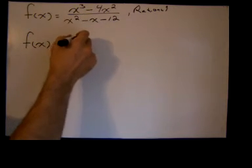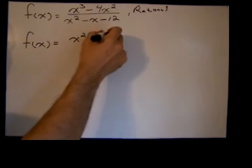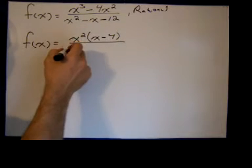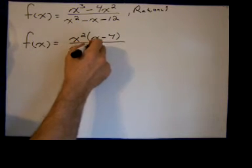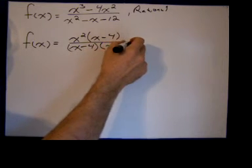I can factor in x squared, the common factor of x squared in the numerator, leaving x minus 4 over the denominator factors into x minus 4, times x plus 3.